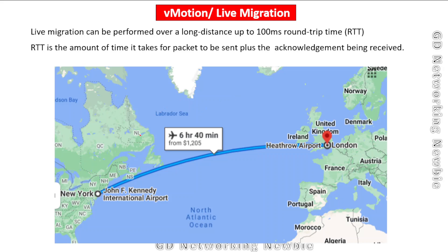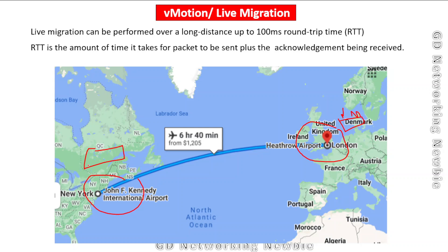So if two locations have a round trip time of around 100 milliseconds, we can move virtual machines between them. For example, VMware's website mentions that we can move a virtual machine from New York City to London. If one host is in New York and another is in London, the round trip time may be around 100 milliseconds, and even in that case we can migrate a virtual machine between those cities — useful when there is a problem on one side, for reasons such as maintenance.